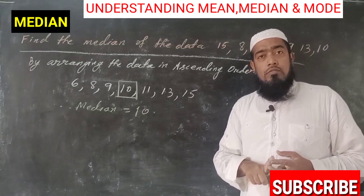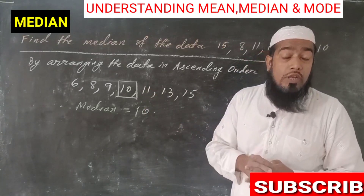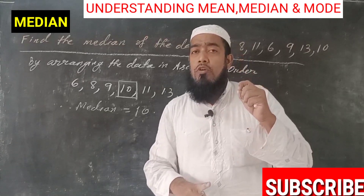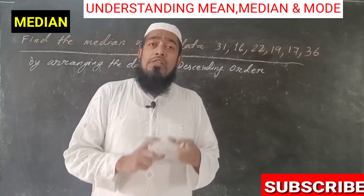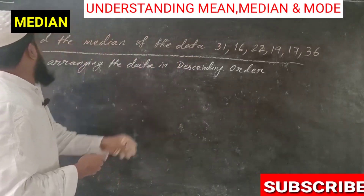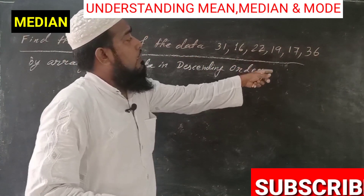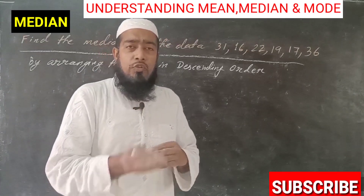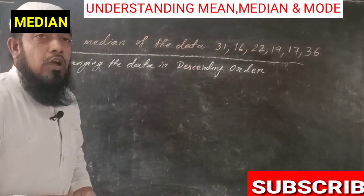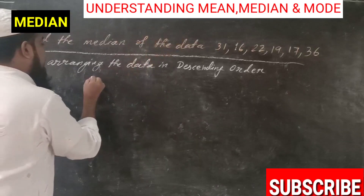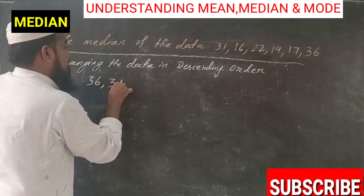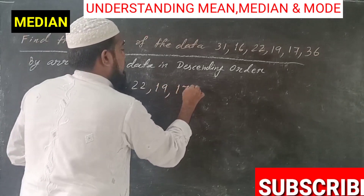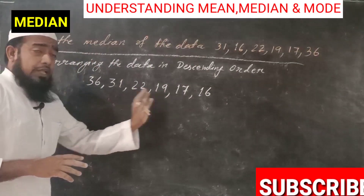This is very easy to find when we have an odd number of data — we can easily find the middle-most number, which is called the median. But what if the data has an even number of values? For example, find the median of the data: 31, 16, 22, 19, 17, and 36. Arranging in descending order gives us: 36, 31, 22, 19, 17, 16.